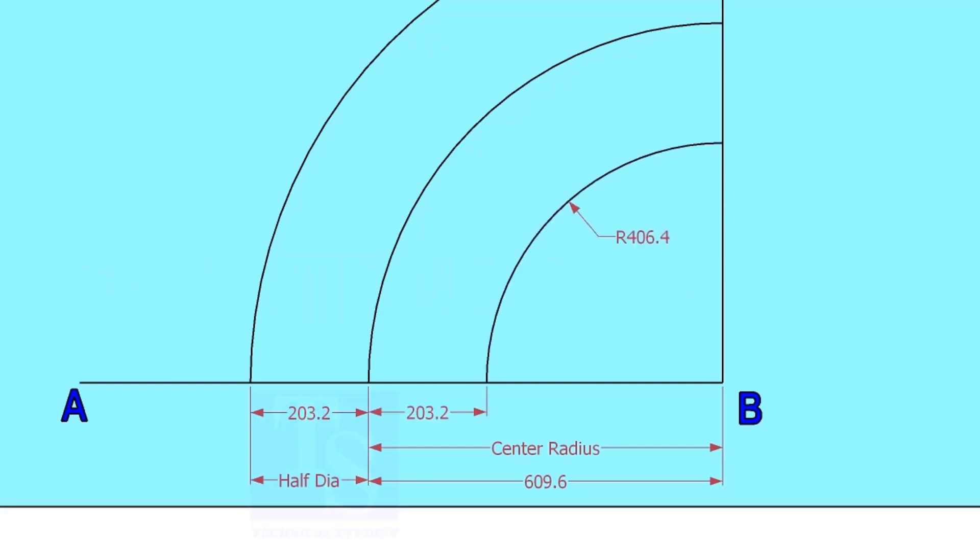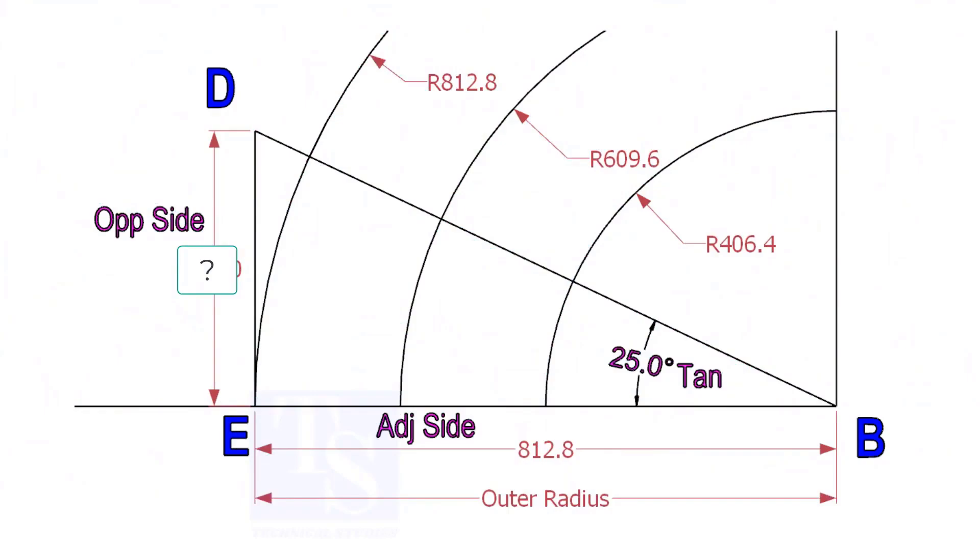Mark the half OD arcs on both sides of the center line. Mark a line 25-degree rotated from the base line AB.